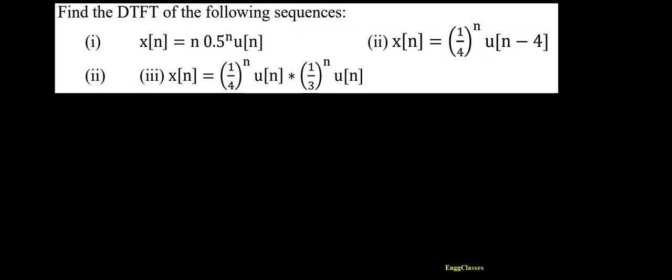Hello everyone, welcome to NG Classes' YouTube channel. In this video lecture, we'll consider another numerical on finding the DTFT of sequences — the second numerical. The first numerical has already been covered in the previous video lecture. Here, x(n) is equal to (1/4)^n * u(n-4).